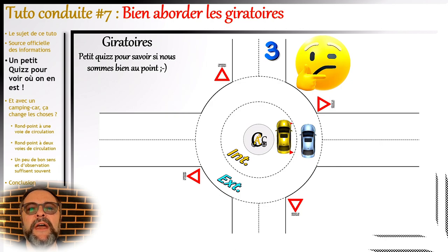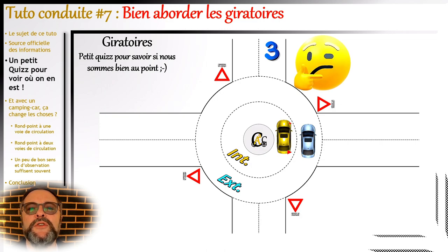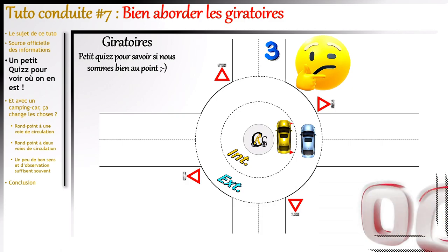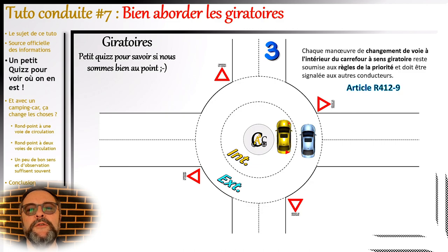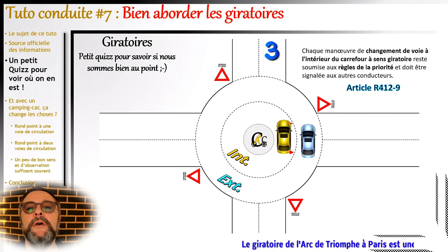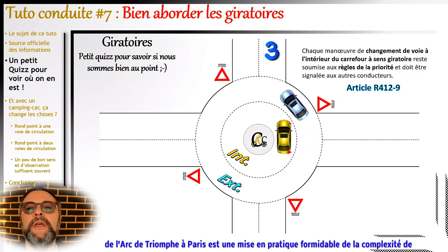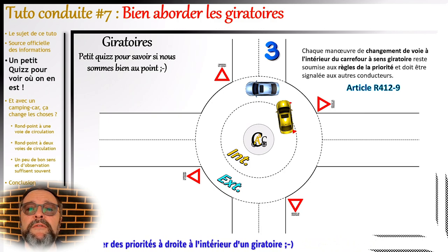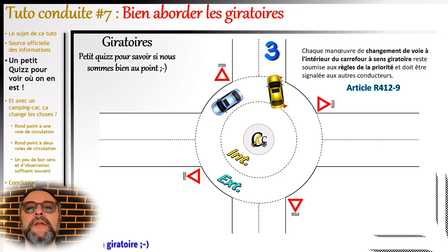Cas concret applicable en camping-car : imaginons que vous conduisez le véhicule orange. Vous avez mis votre clignotant à droite pour vous rabattre et sortir. À la prochaine sortie, un véhicule se trouve légèrement derrière vous sur votre droite — avez-vous la possibilité de passer devant le véhicule bleu ? À l'intérieur des giratoires à plusieurs voies, ce sont les règles de priorité classiques qui s'appliquent. La priorité de base, c'est la priorité à droite. Donc même si le véhicule jaune a mis son clignotant pour se rabattre, il doit la priorité au véhicule bleu et doit le laisser passer. C'est particulièrement délicat en camping-car de se rabattre en toute sécurité dans cette situation.